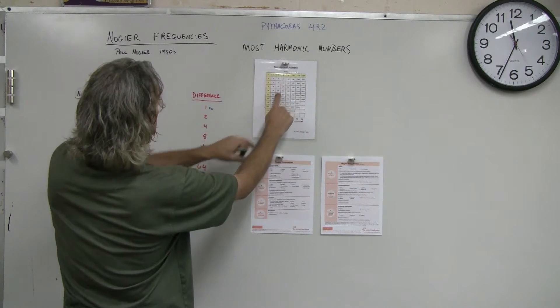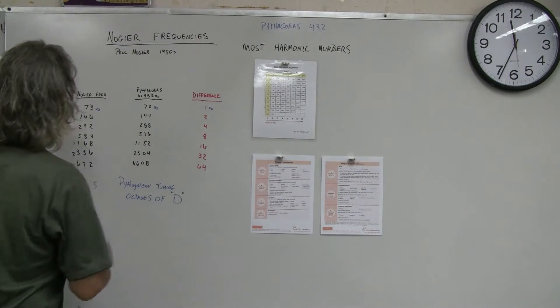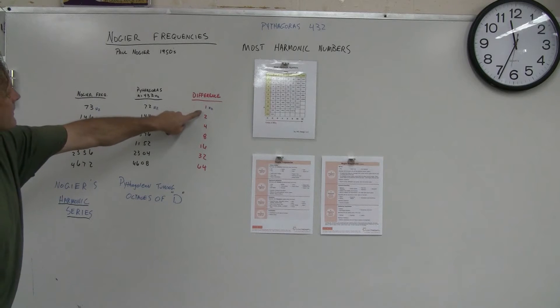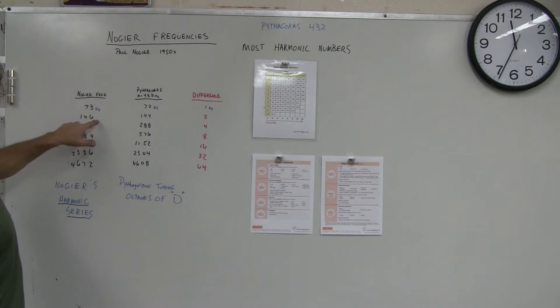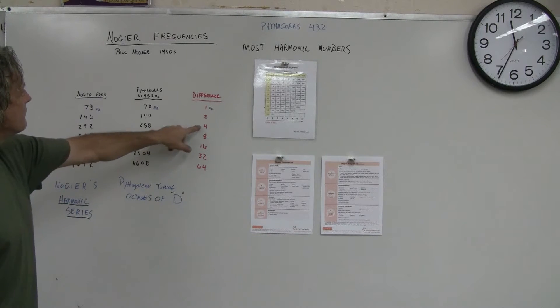You'll see 72, 144, 288, 72, 144, 288. So now what the Nogier frequencies are is 73 is 1 Hertz difference from 72. The 146 is 2 Hertz difference from the 144. 292 is 4 Hertz difference.